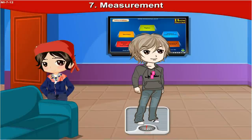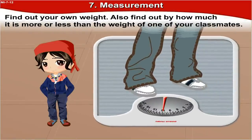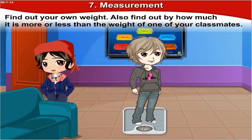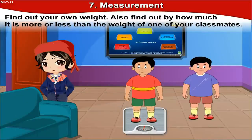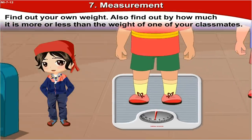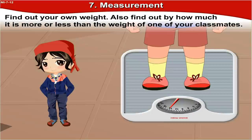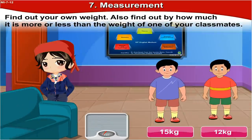Children, I'm sure you'll love to know your weight. You just have to stand on a weighing machine and check the numbers appearing on it. Find out your own weight and also find out by how much it is more or less than the weight of one of your classmates. Tony is trying to find out his weight — Tony weighs 12 kg. Nandu's weight is 15 kg. The weight of Nandu is more than the weight of Tony.